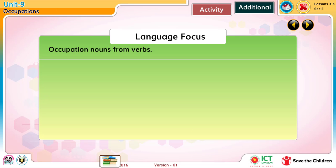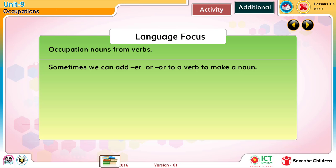Language focus: Occupation nouns from verbs. Sometimes we can add -er or -or to a verb to make a noun. This noun is the occupation related to the verb.